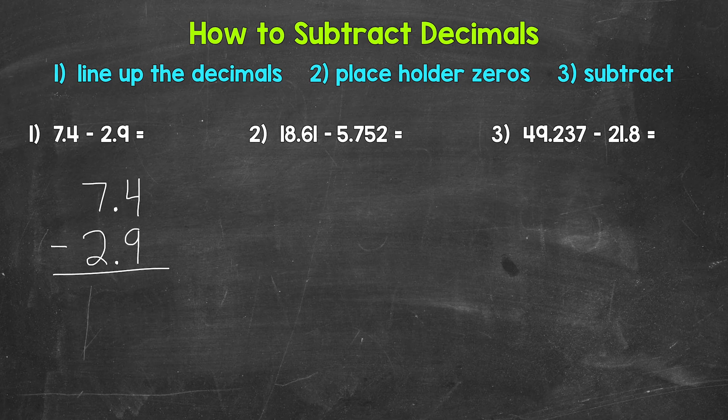You can see that those decimals are lined up, and that's going to line up all of the places — for this example, the ones place and the tenths place. Our second step is to use placeholder zeros if necessary. For number one, we're not going to use any placeholder zeros — we don't need them. But for numbers 2 and 3, we will, and we'll see what those are used for in our next examples.